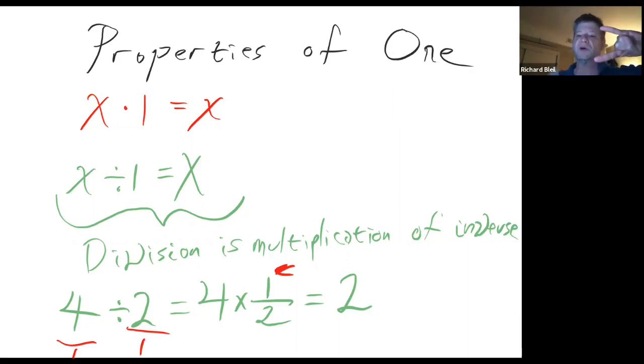When we invert a number, multiplication becomes division. So 4 divided by 2, we know it's 2. 4 times 1 half is also equal to 2.